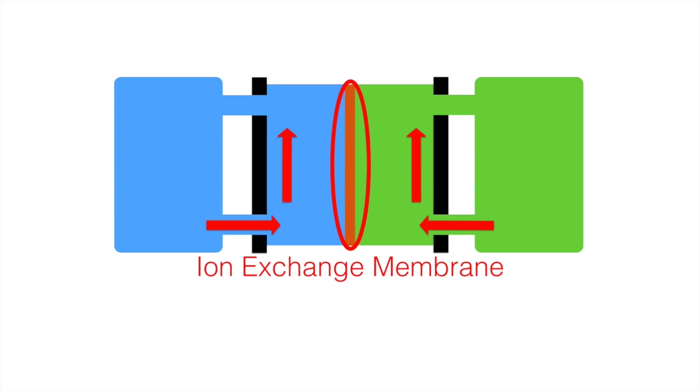The positive electrolyte is pumped from a tank to one side of the flow cell, while the negative electrolyte is pumped to the other side. An ion exchange membrane in the middle of the cell keeps the two solutions from mixing together whilst allowing hydrogen ions to pass through.